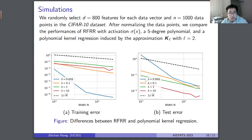Here is a simulation on the CIFAR-10 dataset. We randomly select n samples and d features, then apply the random feature regression model with a degree-5 polynomial activation function sigma. We verify that a polynomial kernel with degree L=2 approximates well. The difference between the random feature regression model and the polynomial kernel regression decays at rate 1/sqrt(N) for different regularization parameters, both for training error difference and test error difference, consistent with our theoretical rate of 1/sqrt(N).